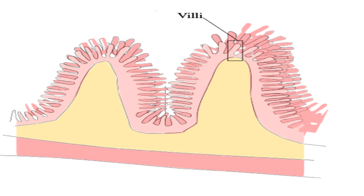Ependymal cells also have microvilli, which are finger-like membrane protrusions that increase the surface area of ependymal cells. These microvilli allow them to reabsorb the cerebrospinal fluid. So ependymal cells both produce and reabsorb cerebrospinal fluid.